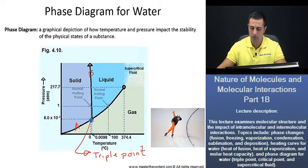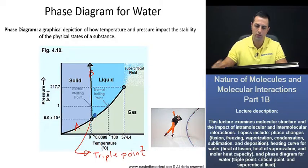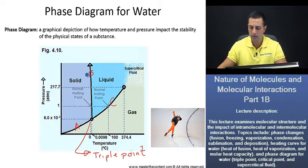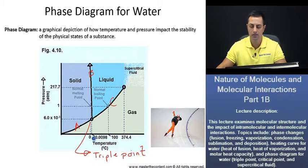Now, getting back to our slide over here, the solid line right here, which we'll designate as solid line C, that's going to signify all the different points where liquid water and gaseous water vapor are going to be in equilibrium at different pressure and temperature combinations. Furthermore, these are going to be all the different boiling points for water at different pressure and temperature combinations here.